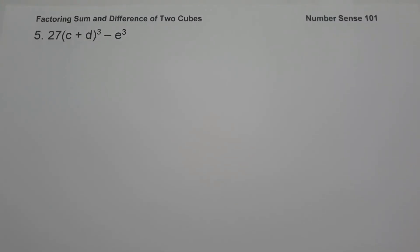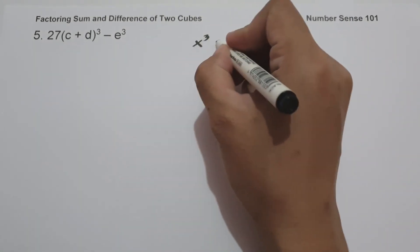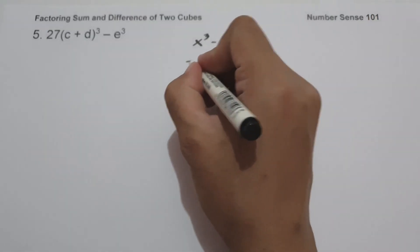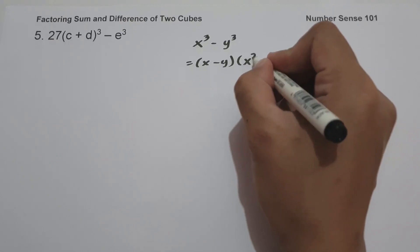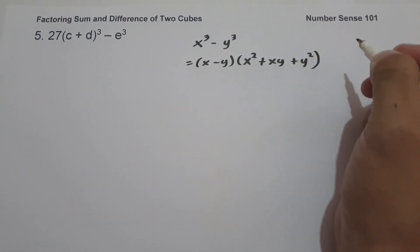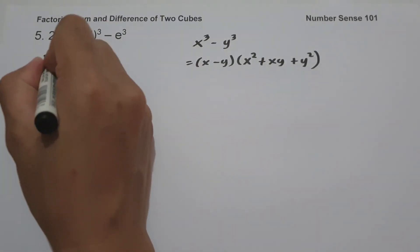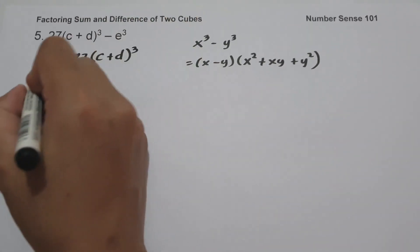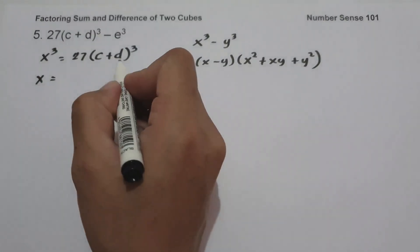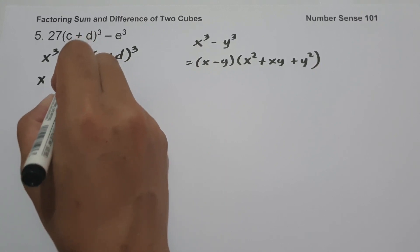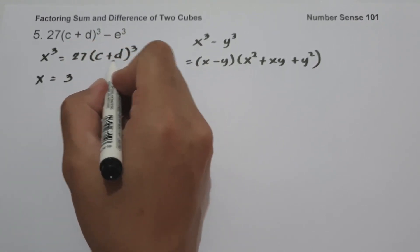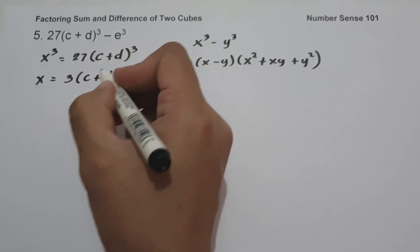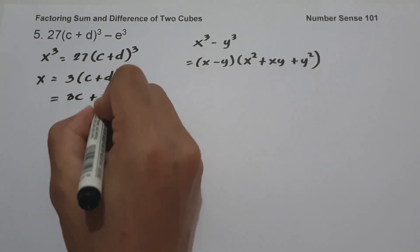In our last example, we have 27(c + d)³ − e³. As you can see, this is written in the form of the difference of two cubes, x³ − y³ = (x − y)(x² + xy + y²). To find x³: the first term is 27(c + d)³. The cube root of 27 is 3, and the cube root of (c + d)³ is (c + d), so x = 3(c + d), which we can write as 3c + 3d.